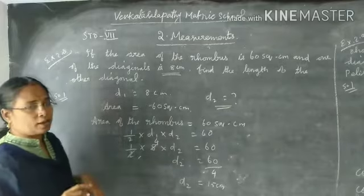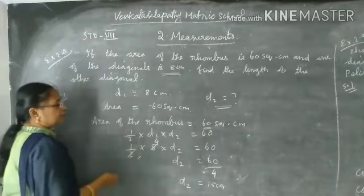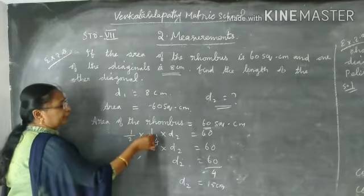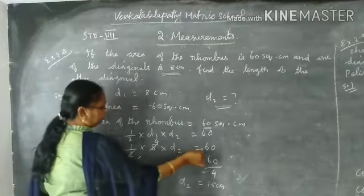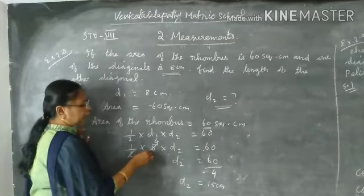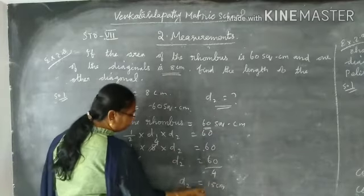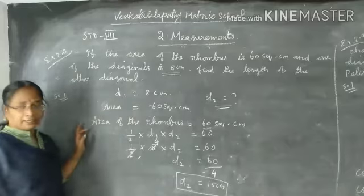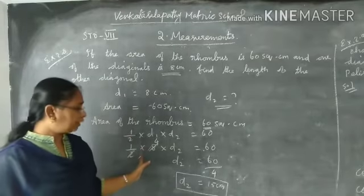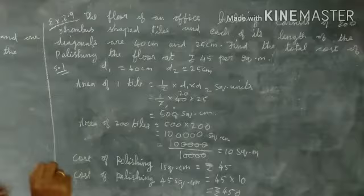Area of rhombus is 60 square centimeters. Area of rhombus is half into d1 into d2. So 60 equals half into 8 into d2. 60 equals 4 into d2. Multiplication mode becomes division mode. So d2 equals 15. This is length of the other diagonal.